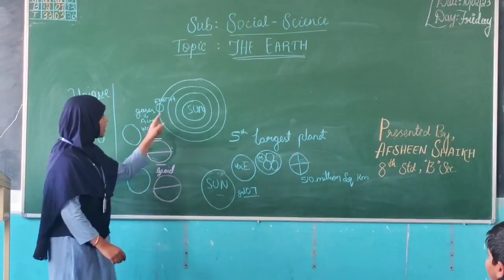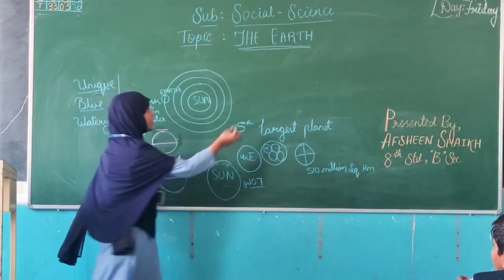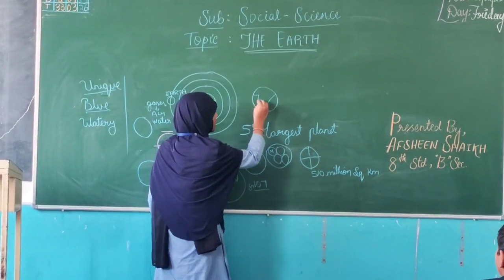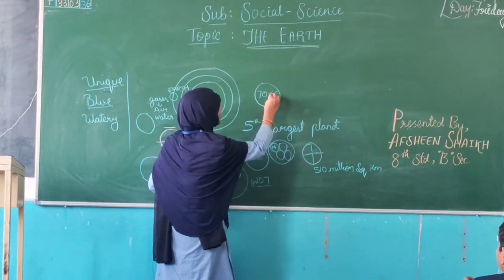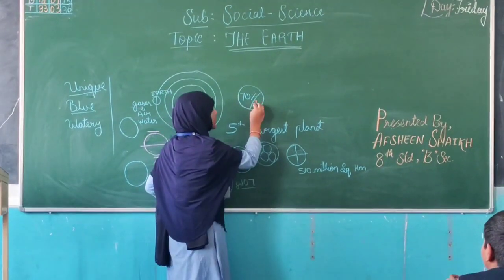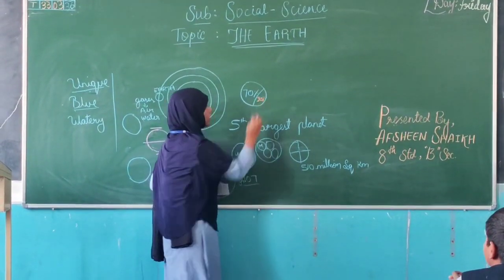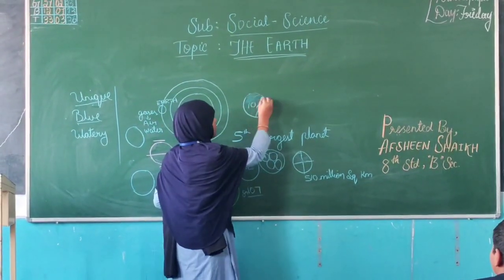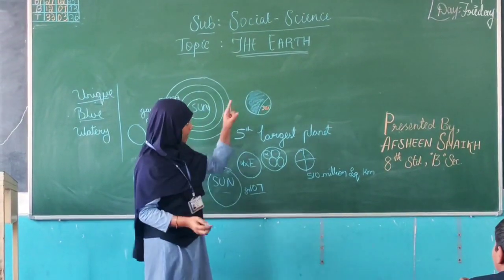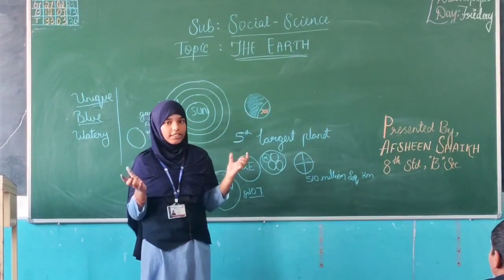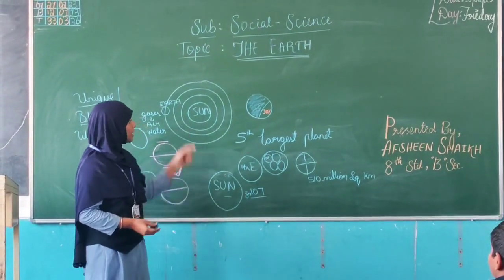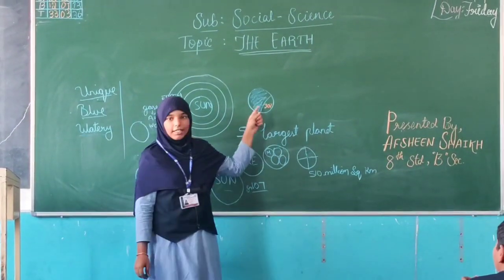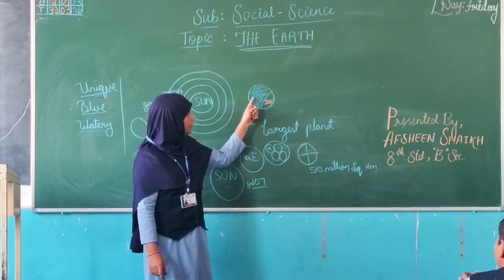Why is it called the Blue Planet? Because there is 70% water on Earth. 70% of the Earth is covered by water and the remaining 30% is covered by land. The reflection of the water — when the sun's rays hit it — reflects as blue in color in outer space. So it is known as the Blue Planet. And Watery Planet — as I said, the Earth is covered by 70% water, so most of it is covered by water, and it is known as the Watery Planet.